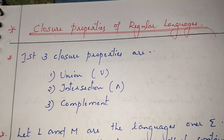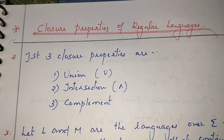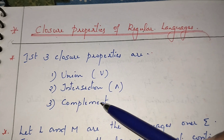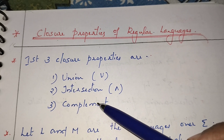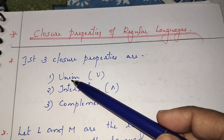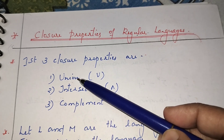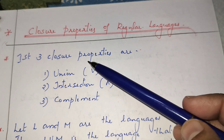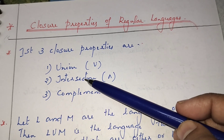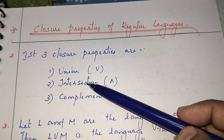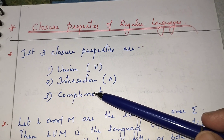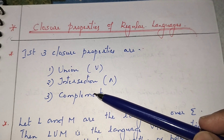Here I am going to explain about the closure properties of regular languages. Mainly there are three properties: union, intersection, and complement. Union means if there are two regular languages and we perform their union, the result is also a regular language. Similarly, the intersection of two regular languages is also a regular language. And if L is a regular language, then its complement is also a regular language.